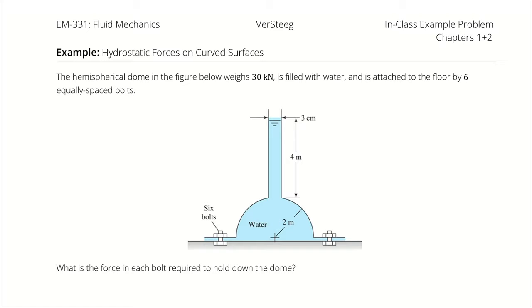The hemispherical dome in the figure below weighs 30 kilonewtons, is filled with water, and is attached to the floor with six equally spaced bolts. What is the force in each bolt required to hold down the dome?